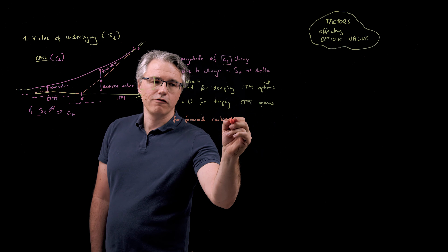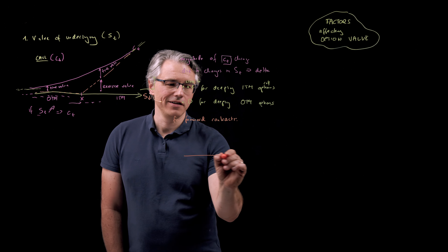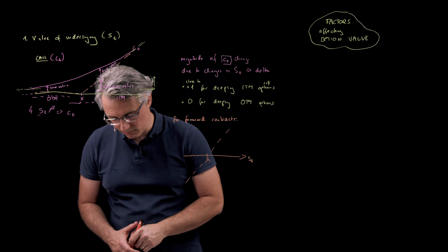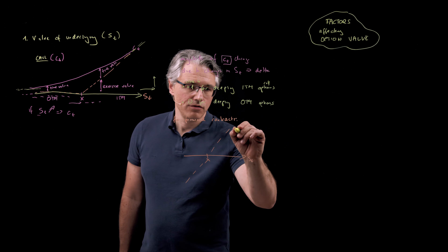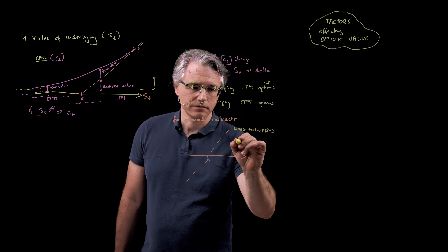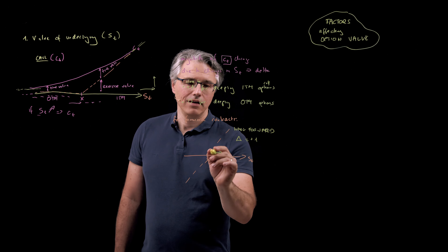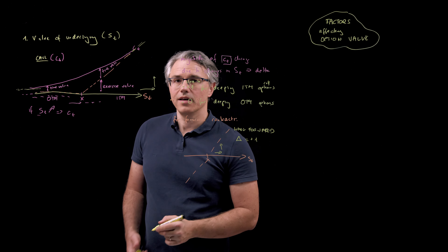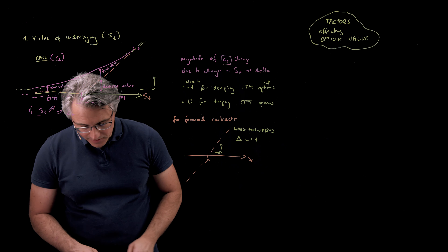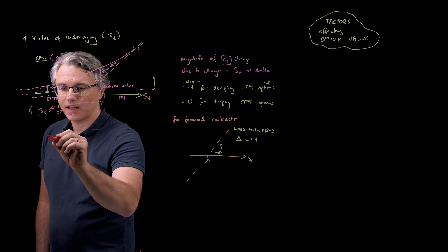Not perhaps at Level 1. Be aware that in the case of forward contracts — your curriculum does mention this — for forward contracts, if you were to compute delta, remember forward contracts never have anything like time value. Everything there is just a linear, straight payoff line. So if that's S_T and that's X, you get a value for a long position that looks like that — a long forward position. Here, delta, which we symbolize with this symbol, is plus one. Because if S_T changes by one dollar, this produces an equivalent change to the value of the long position.